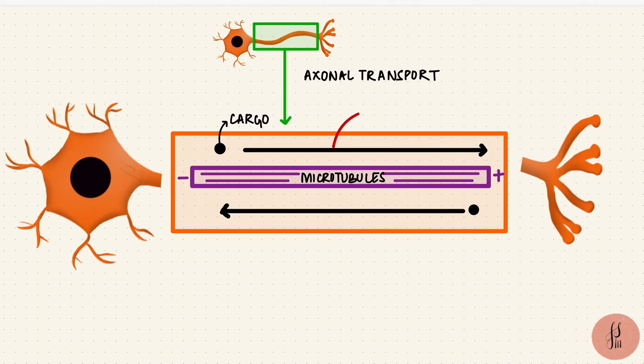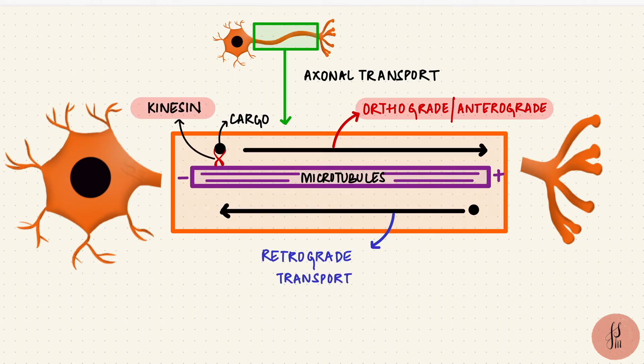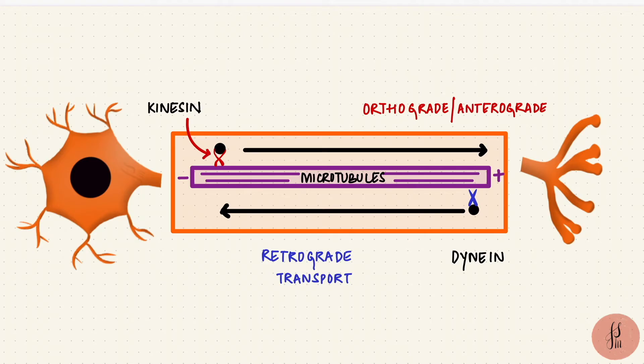Movement towards the terminal is orthograde or anterograde transport, minus to plus. And that's using a molecular motor protein called kinesin. Retrograde transport is backwards towards the cell body, that's with dynein. So it's from plus to minus. Kinesin is for orthograde transport. Dynein is for retrograde transport.